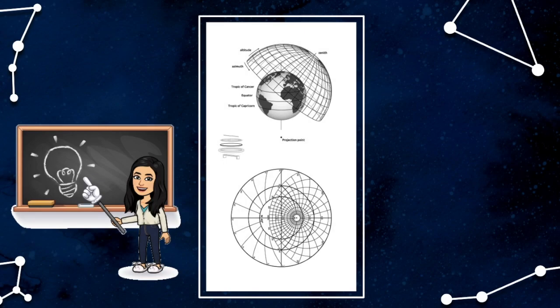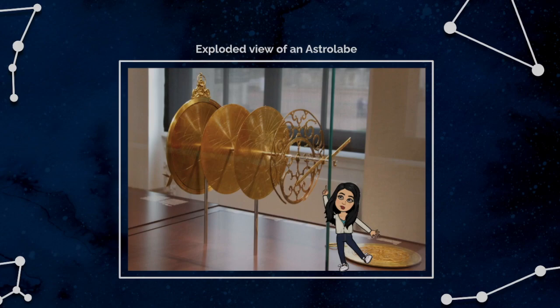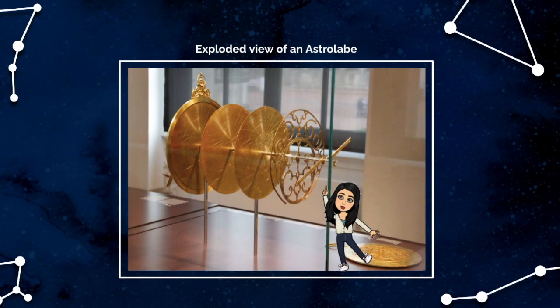The planispheric projection involves plotting a sphere on a plane. The front of the astrolabe is a combination of two such projections. One is that of the celestial sphere, from the celestial north pole to the tropic of Capricorn. The sun's path in the sky is on the ecliptic. And the other is the local sky visible to an observer on the earth.